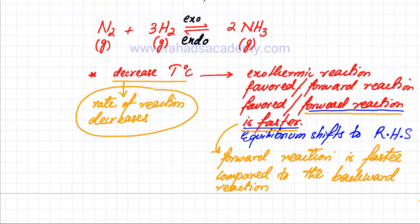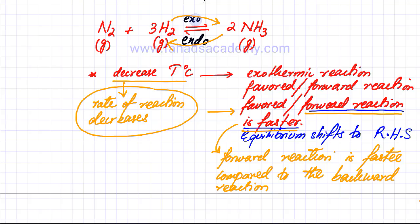Looking at this term again and comparing it with Le Chatelier's principle: the forward reaction is faster. What that means is that when you decrease temperature, both reactions are slowing down. The backward reaction is slowing down more, and the forward reaction is slowing down less. If you compare them with each other, the forward reaction is faster compared to the backward reaction. So this term has nothing to do with the rate of reaction — it's simply comparing the two reactions to find out which is faster relative to each other.